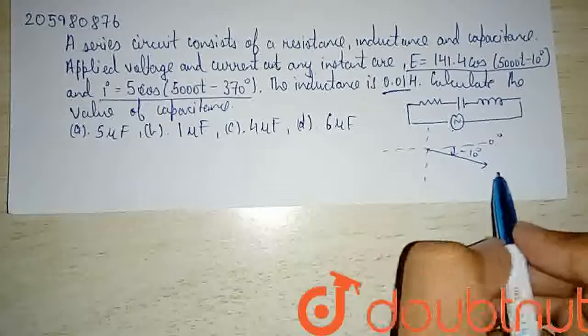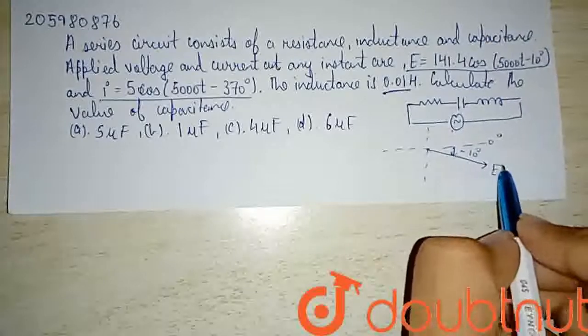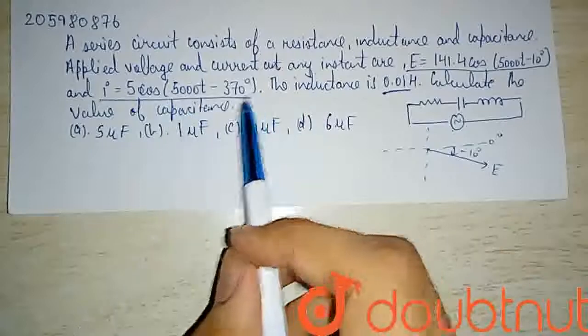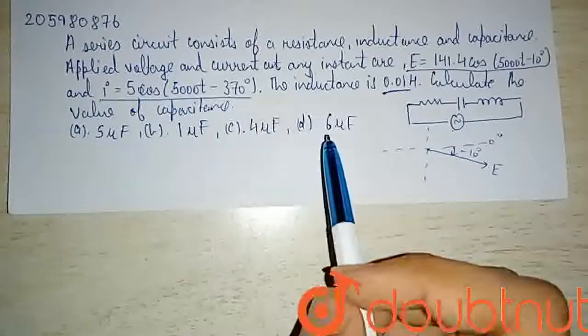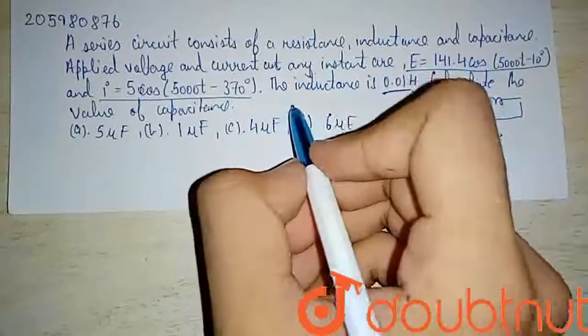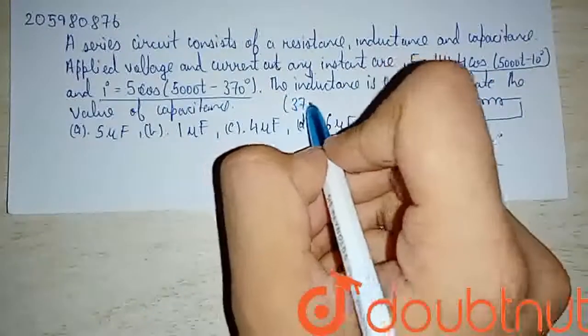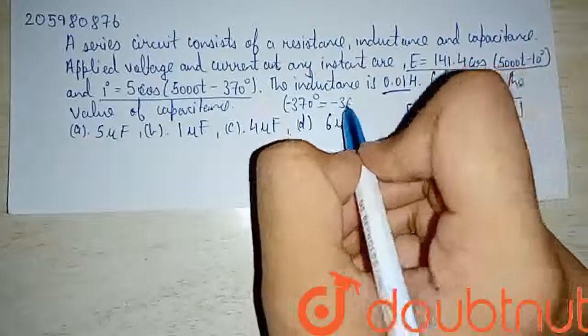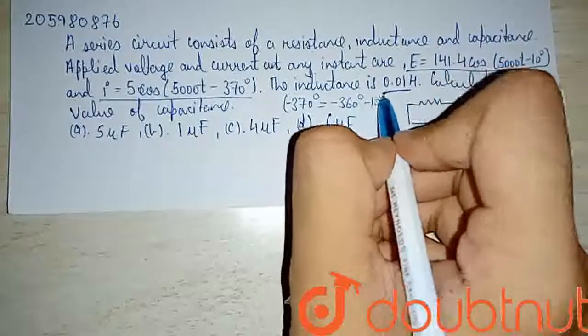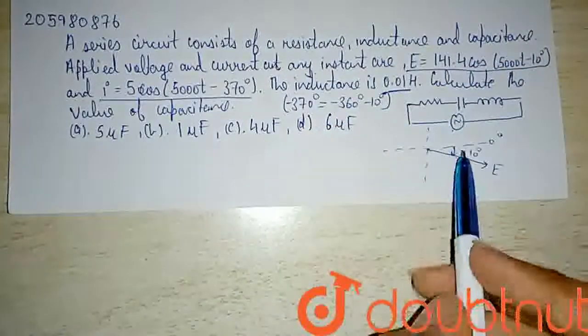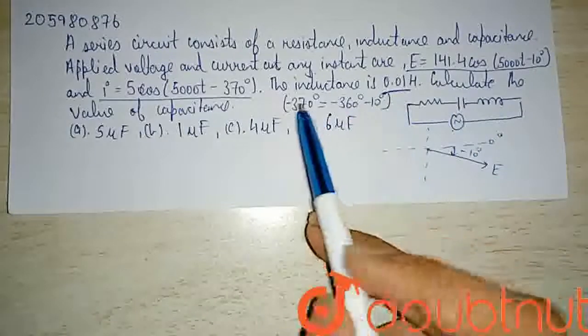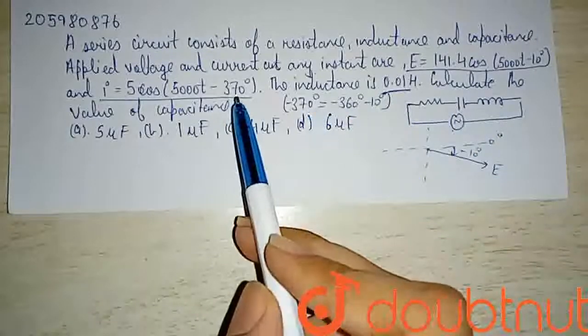This is the A vector, the phaser of A. Now I, which is at minus 370 degrees - I can write minus 370 as minus 360 minus 10.